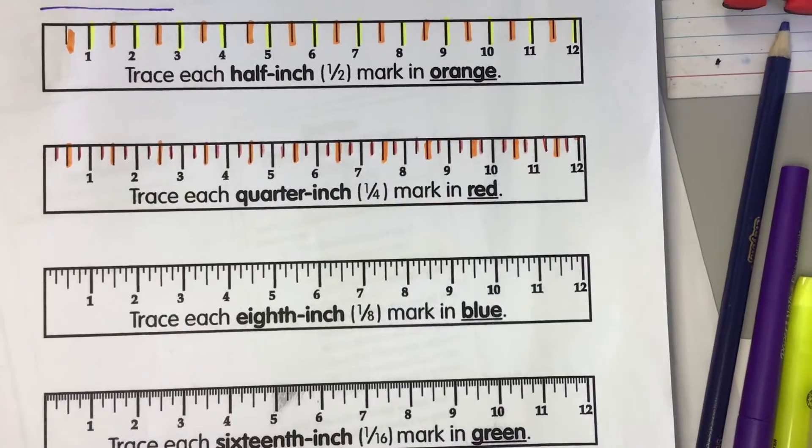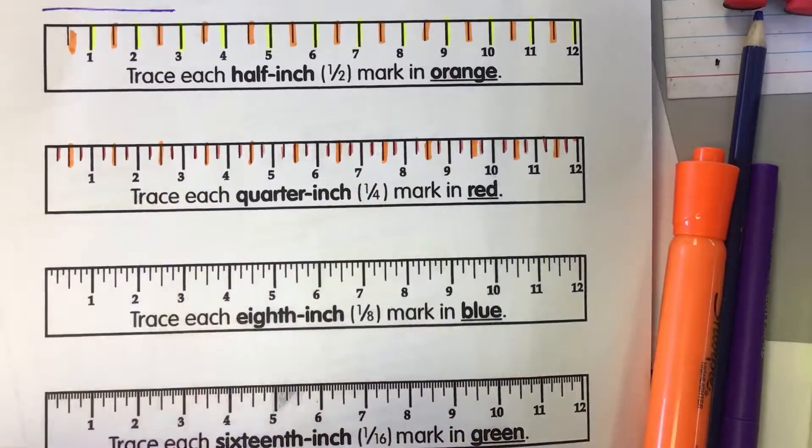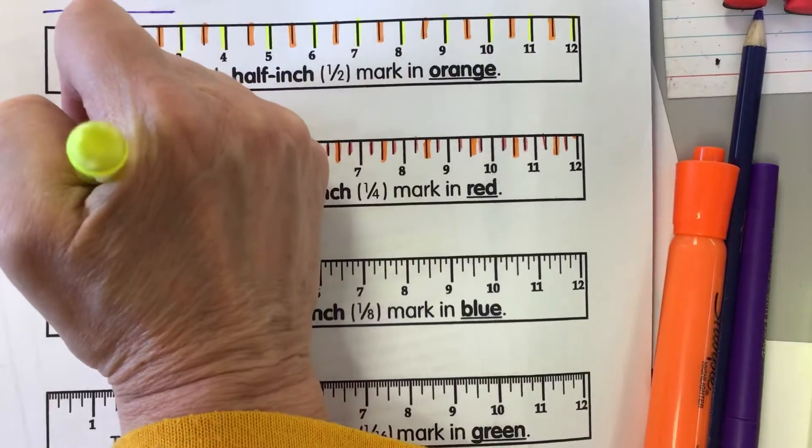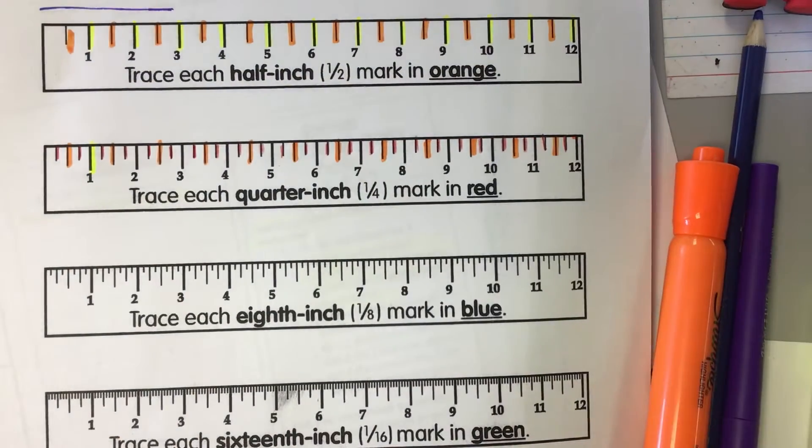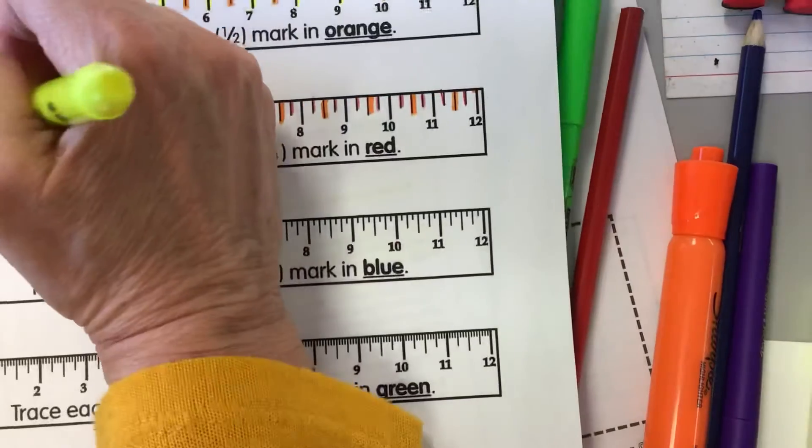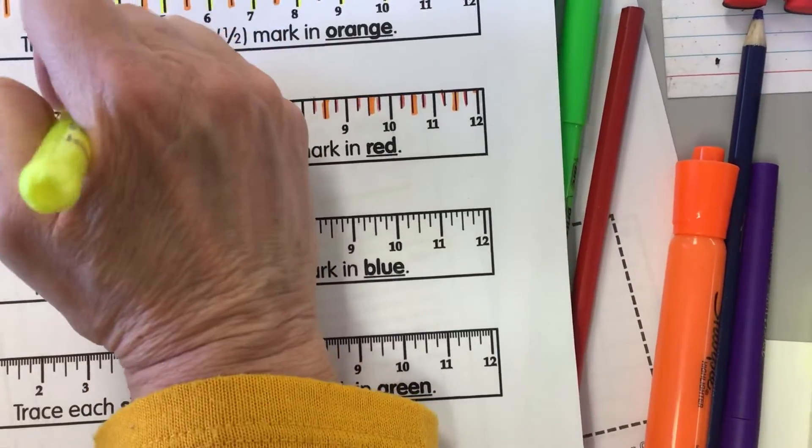So every time you see, and then again, three-fourths, four-fourths. Okay, that can be reduced to one. Okay? So go ahead and hit those in yellow for me.